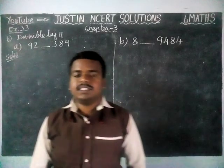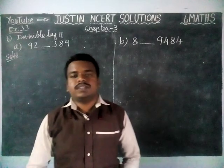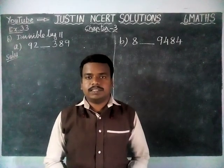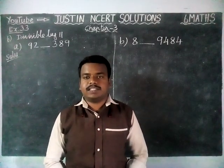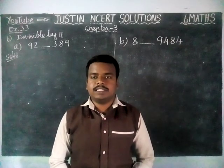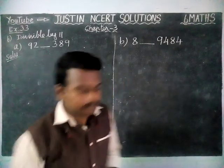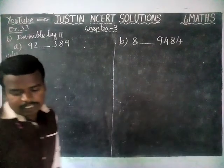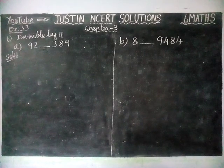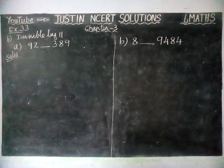Hi students, welcome to Justine NCIT Solutions. In this video, we are going to see 6th Maths Chapter 3 Exercise 3.3, 6th Question. And the question is: write a digit in the blank space of each of the following numbers so that the number formed is divisible by 11.